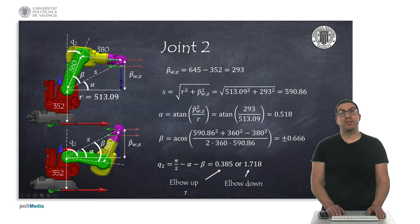On the other hand we observe that the same wrist point can be achieved with two possible values for q2, which implies a configuration with the elbow up or elbow down.